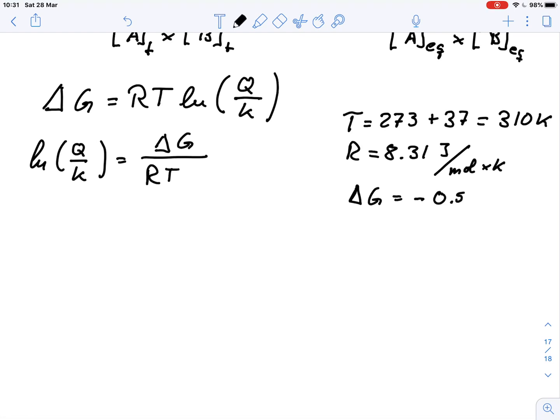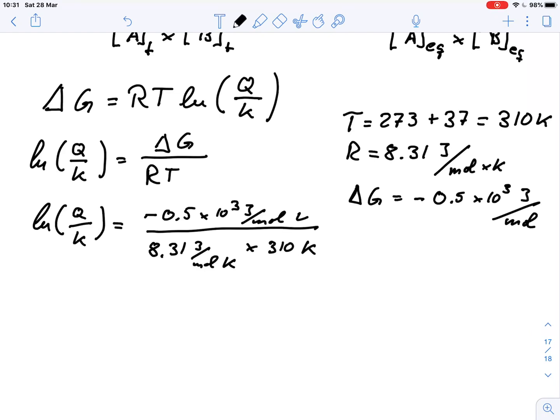0.5 times 10 to the 3 Joule per mole. So all we need to do is plug these numbers in. Ln(Q over K) equals negative 0.5 times 10 to the 3 Joule per mole divided by 8.31 Joule per mole and Kelvin times 310 Kelvin. Kelvin cancels out, Joule per mole cancels out, so all is good.